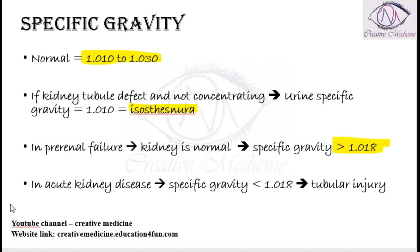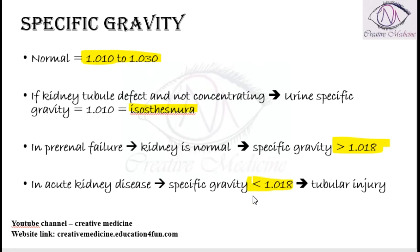In acute kidney disease, there is an intrinsic kidney problem because the defect is in the kidney and in the tubular structure. Thus, the specific gravity is less than 1.018 in case of tubular injury.